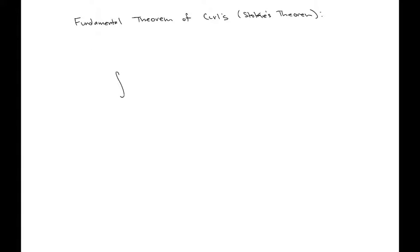It basically says that if you take a surface integral — this is a surface integral of the curl of a vector field, where v is just a general vector field — it is equal to the line integral around a closed path of that same vector field dotted with that path.